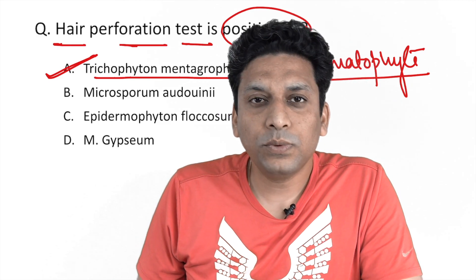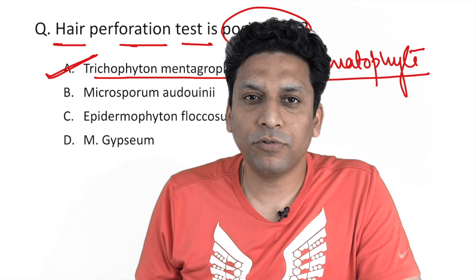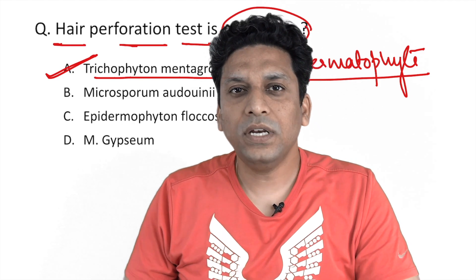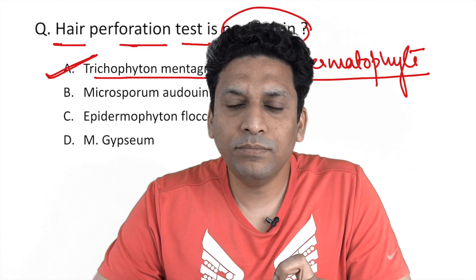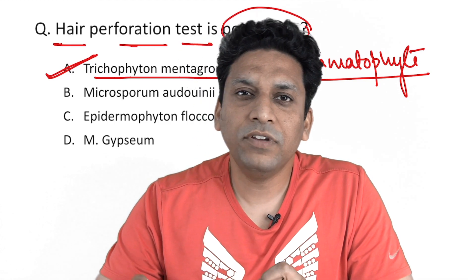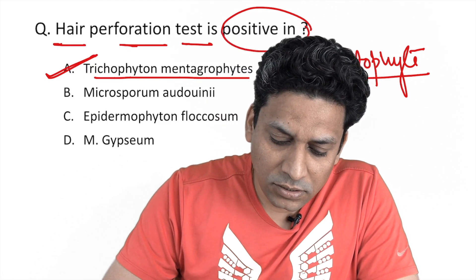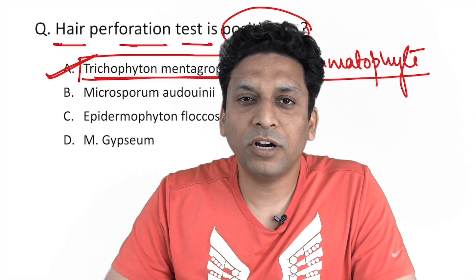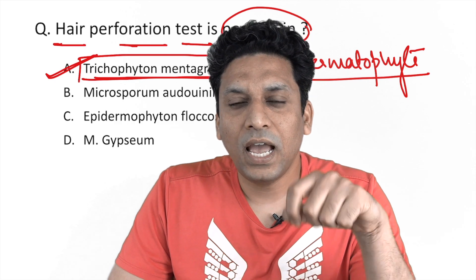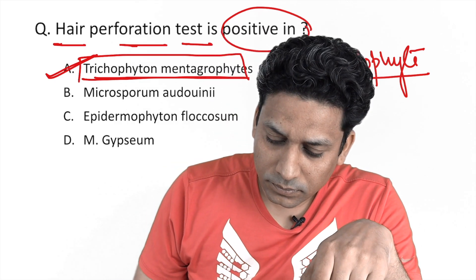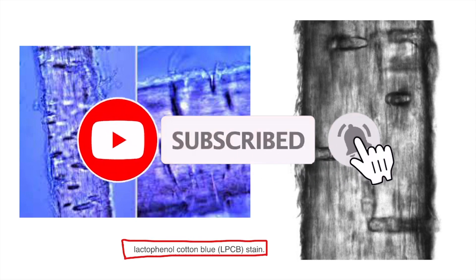There is one test done to identify this Trichophyton, known as the hair perforation test. In this test, we take hair follicles, autoclave them, keep them in water, and then inoculate with the test fungus — which could be Trichophyton mentagrophytes or any other dermatophytic fungus — and keep it at room temperature.